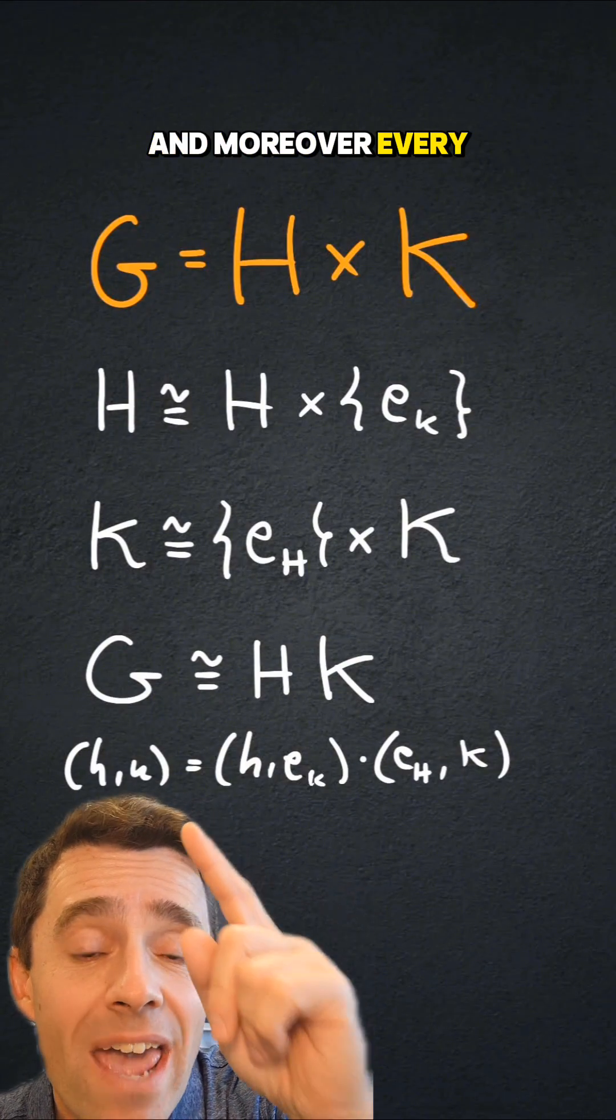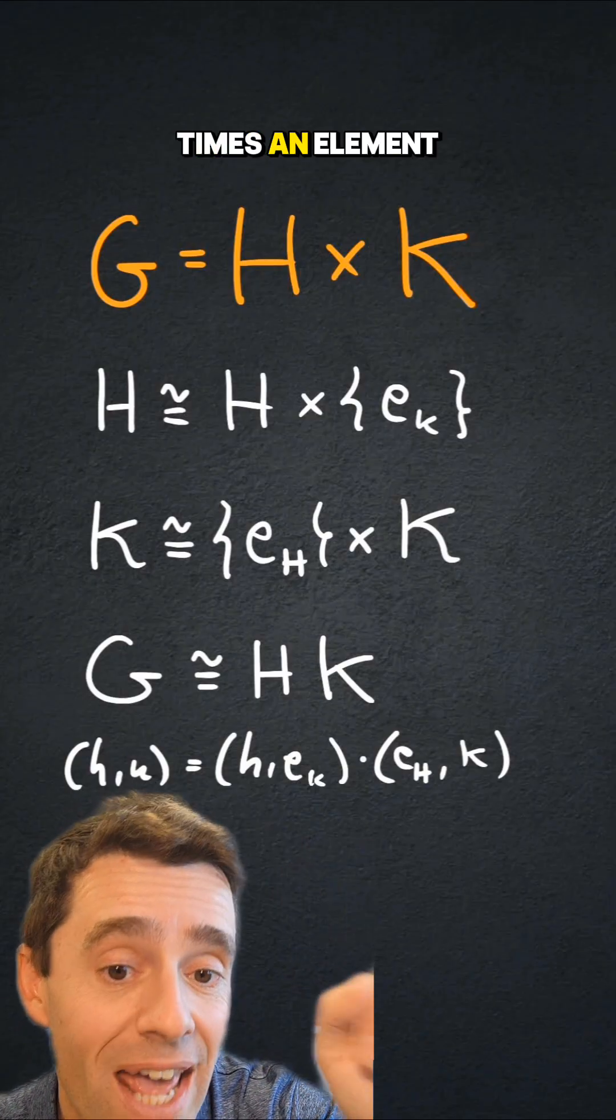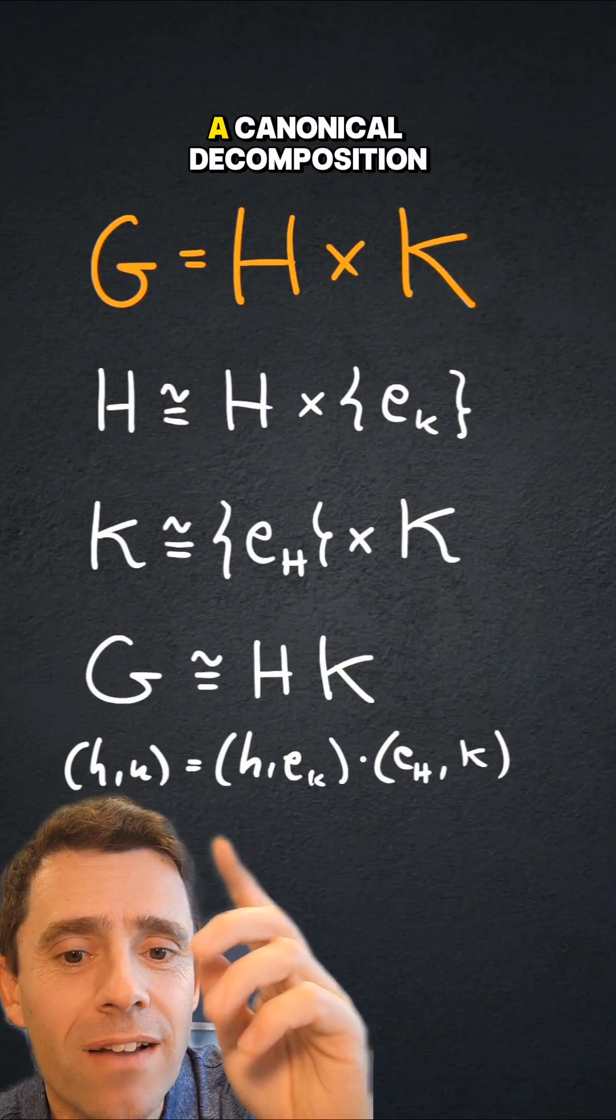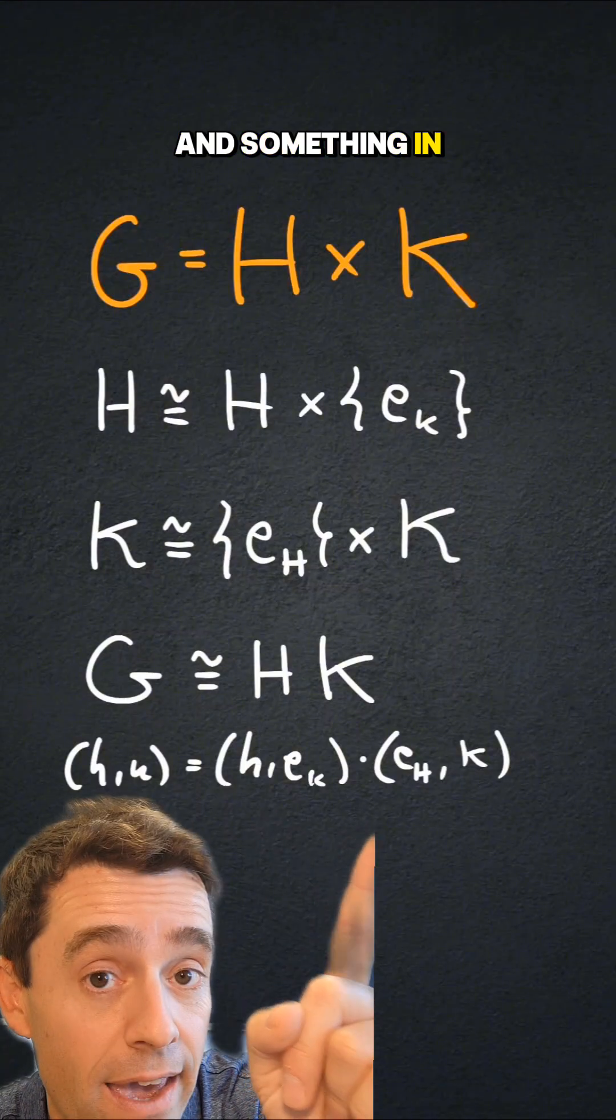And moreover, every element in g can be written as an element in h times an element in k. So there is a canonical decomposition of elements of g as something in h and something in k.